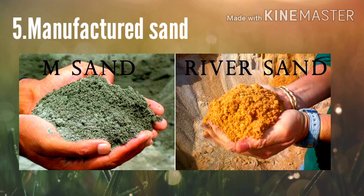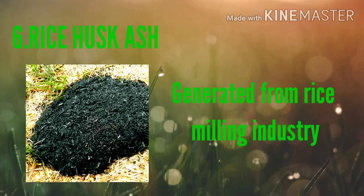The next material is m-sand, meaning manufactured sand. Generally, sand is of two types: river sand and manufactured sand. River sand is extracted from the river, and manufactured sand is created in the factory by crushing rocks. The next material is rice husk ash, which is generated from the rice milling industry and is mixed with fly ash as a replacement for cement. These materials — fly ash, glass aggregate, rice husk ash — are recycled and reused, which is why green concrete is economical.